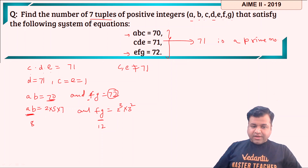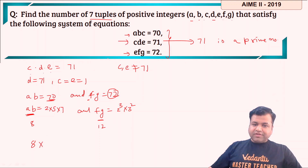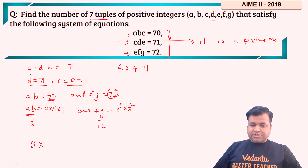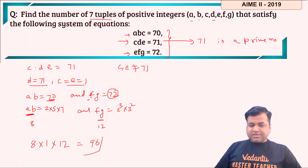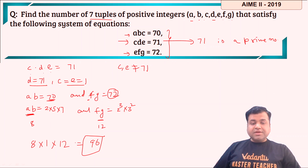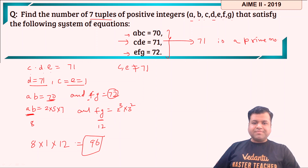So A·B = 70 can be achieved in 8 ways, C·D·E = 71 can be achieved in exactly 1 way (D = 71, C = E = 1), and F·G = 72 can be achieved in 12 ways. In all, the total number of 7-tuples is 8 × 1 × 12 = 96. That's it from today's session — we discussed three previous year AIME questions. In the next session we will be discussing questions of the Singapore Math Olympiad exam. See you in the next session. Take care. Bye-bye.